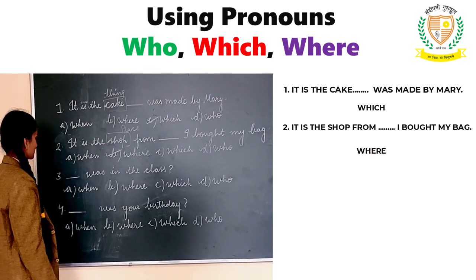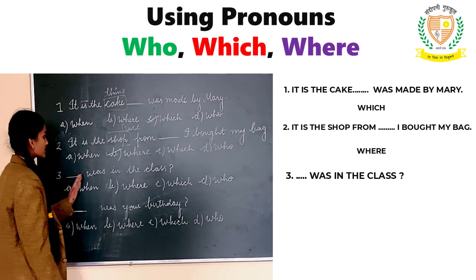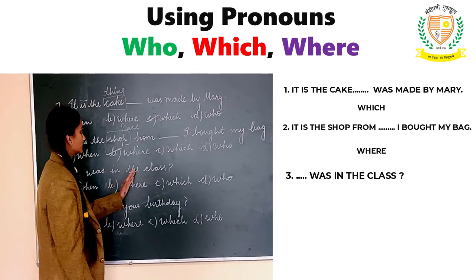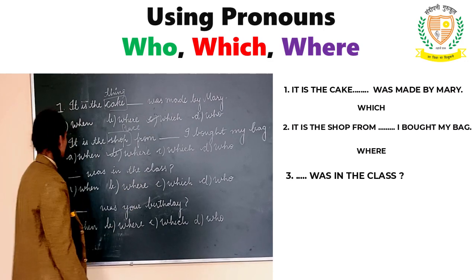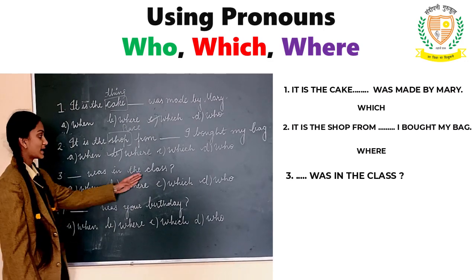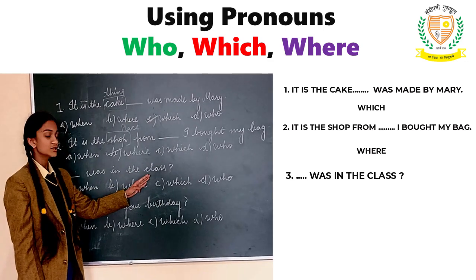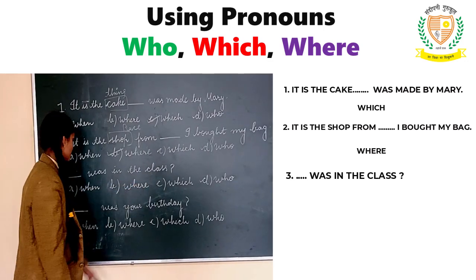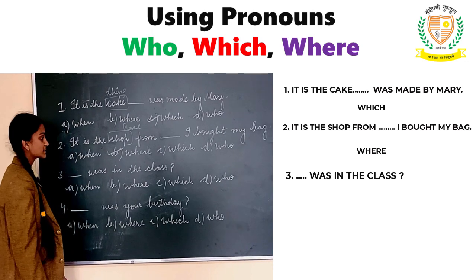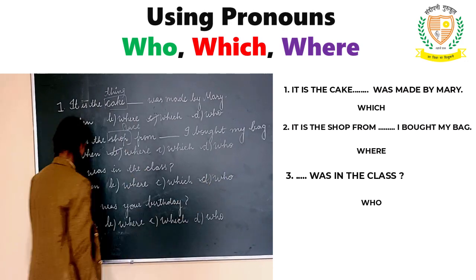Let us take an example — dash was in the class. So here, in class there are students, so there are persons. So with a person we use who.